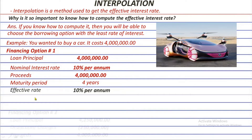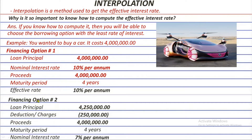We have option 2, and actually the problem is in this option. The loan principal that you need to avail in this option is 4 million 250 thousand in order to get a proceeds of 4 million. Remember, you need 4 million to purchase this car. But why is that? It's because the provider of the funds needs to charge 250 thousand worth of deductions in advance.